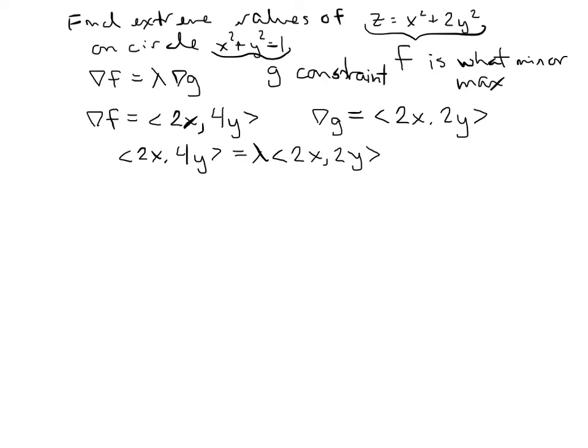So notice I have two components here, and I'm going to break this down into the equations from these two components. So for the x component, 2x has to equal lambda times 2x. And for the y component, 4y has to equal lambda times 4y.